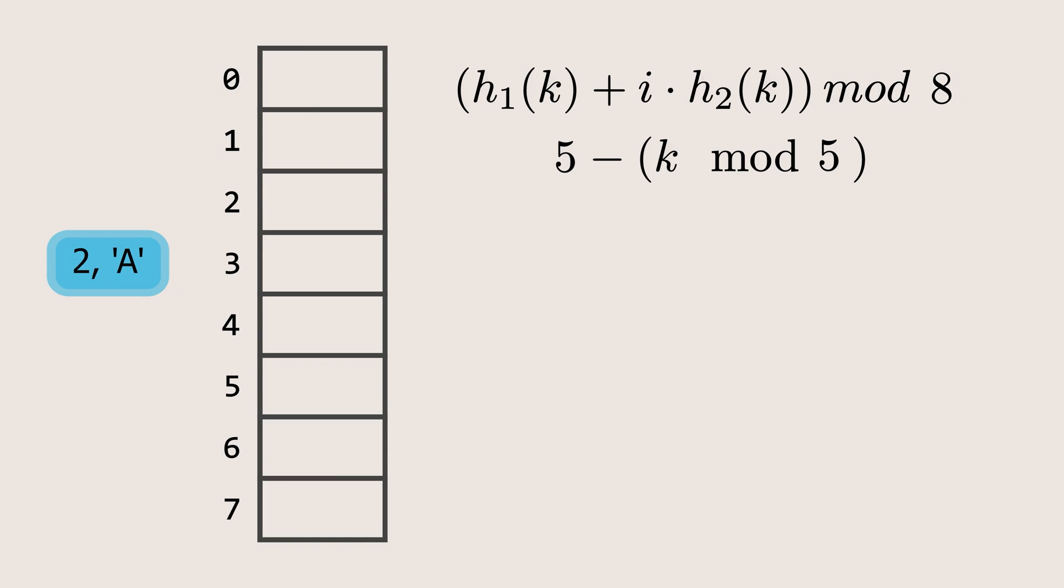Let's insert an element with the key 2. The hash output is 2, and since index 2 is empty, we'll insert the element there. Next, let's insert the element with the key 10. The hash output is 2, so it should be placed at index 2. But since index 2 is already occupied, we'll use double hashing. First, we calculate the second hash function using 10 as the key. The output is 5. Now, we plug this into the formula, where the first hash value is 2, i equals 1, and the second hash output is 5. This gives us an output of 7, so we will check if index 7 is empty. It is empty, so we will insert the element there.